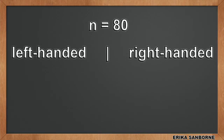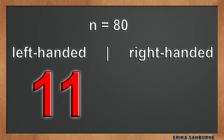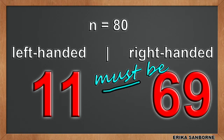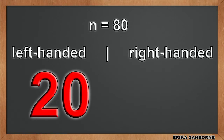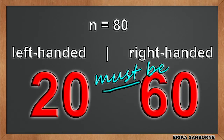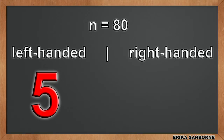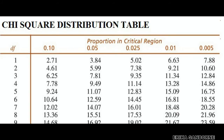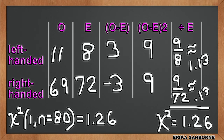It should also make sense because degrees of freedom is the number of scores free to vary. I have 80 students; I could have observed any number of them as left-handed, but once that's set, the rest of the 80 must be right-handed — that number's not free to vary. Only the first one is. That's what it means to say there's only one degree of freedom. Here's the table: degrees of freedom is 1, 1% significance level, chi-square critical = 6.63. Our test statistic was 1.26, which is nowhere near this critical value, so this is not a significant test.